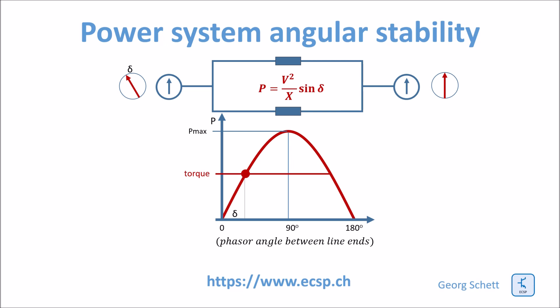And there would be a phase angle established, the rotor angle would be established accordingly. Now, for whatever reason, we would lose one of the two parallel lines. And then the curve would suddenly look as follows. So you see that based on this curve, we cannot transmit anymore the full power. So what would now happen is that this first original equilibrium we had with a certain phase angle would be reduced.